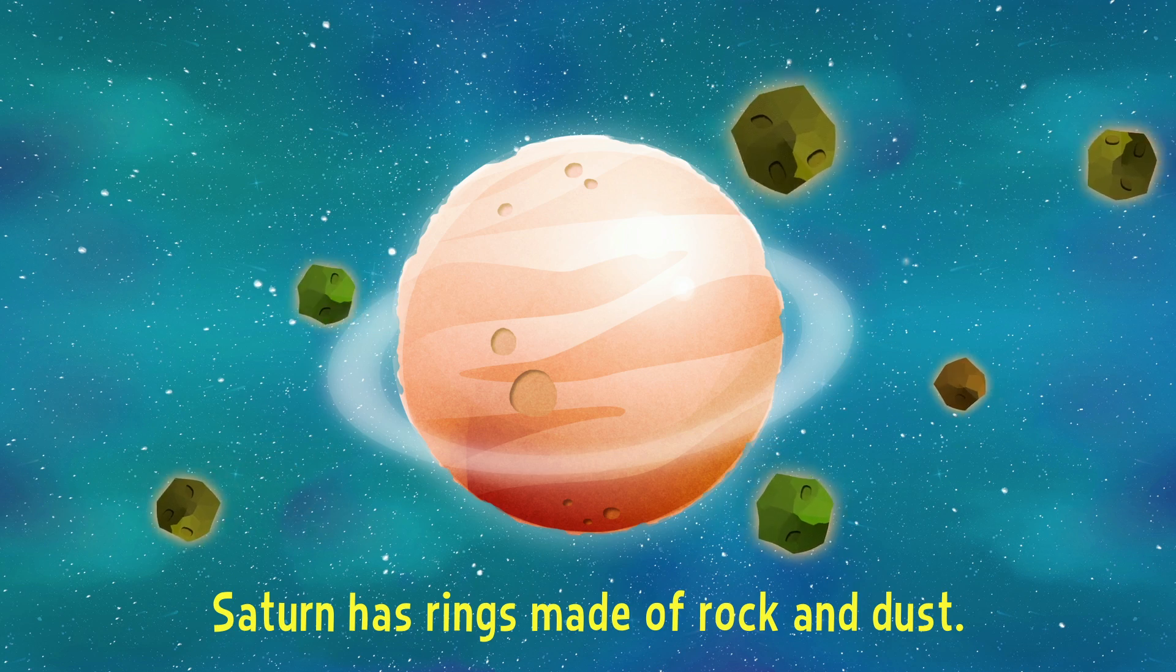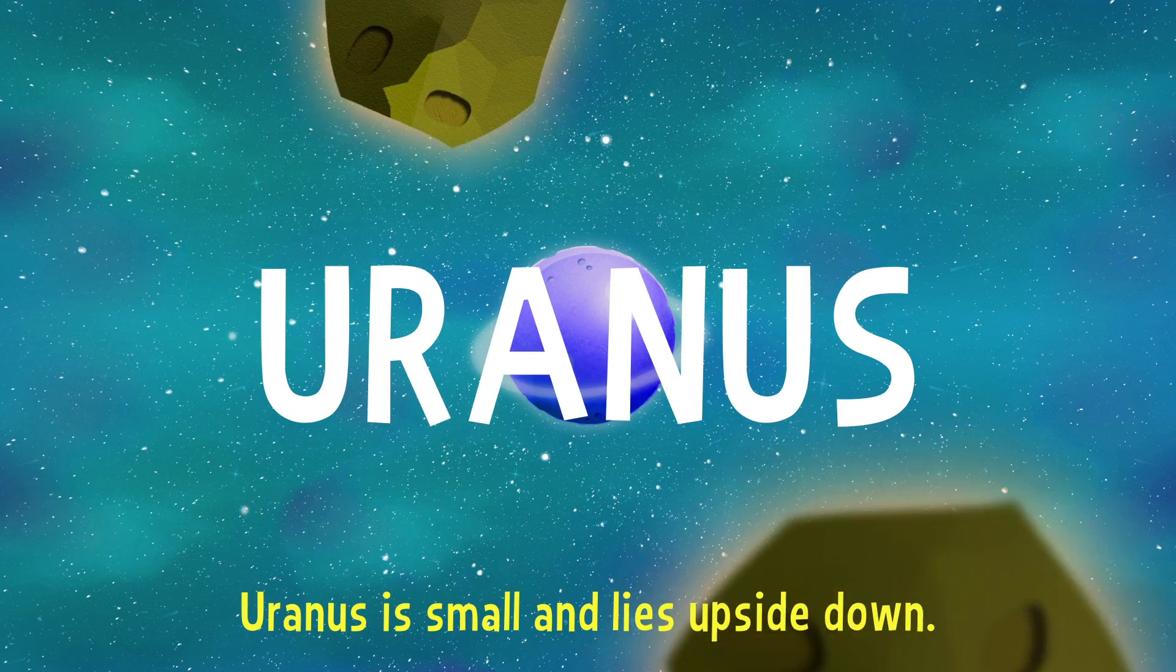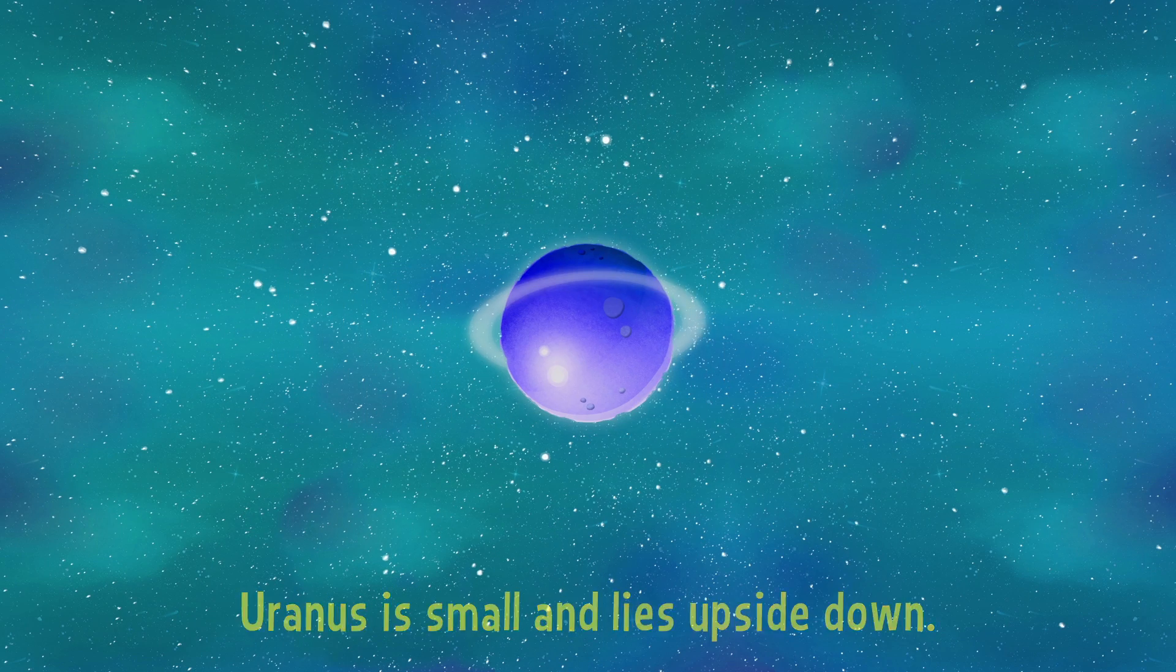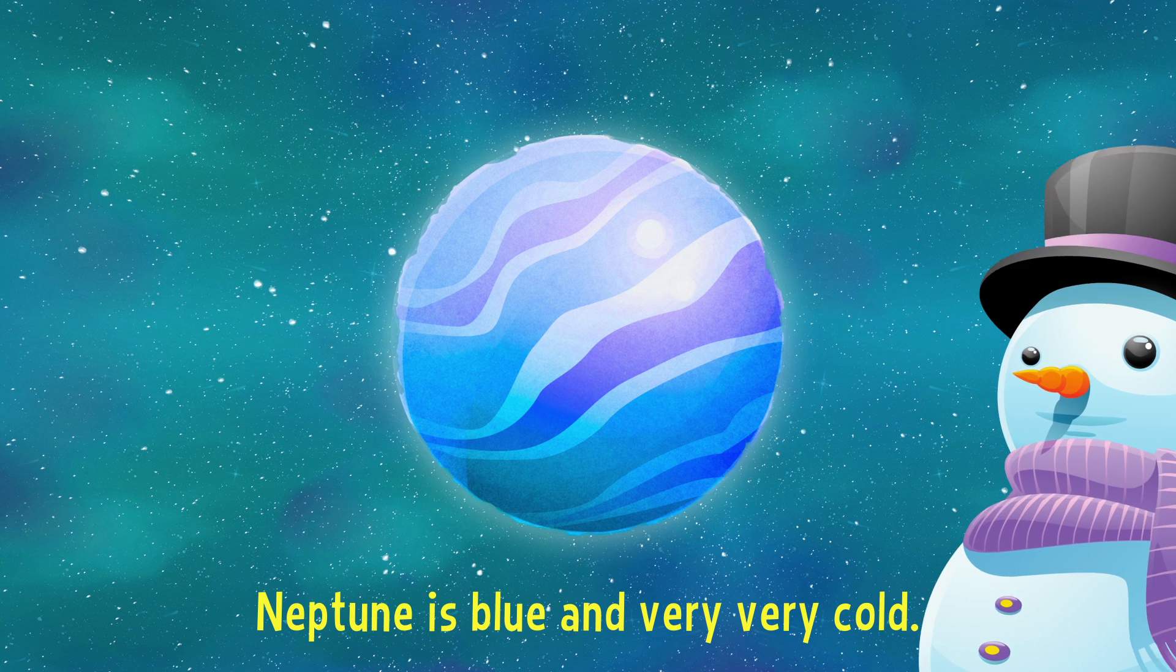of rock and dust. Uranus is small and lies upside down. Neptune is blue and very,